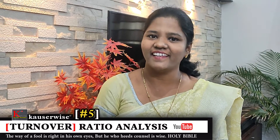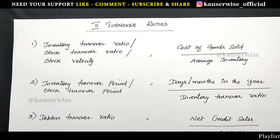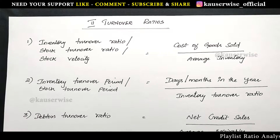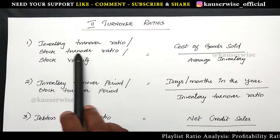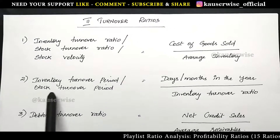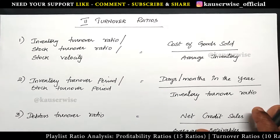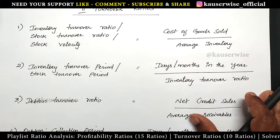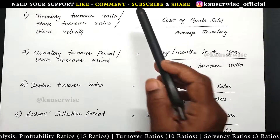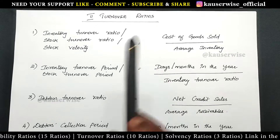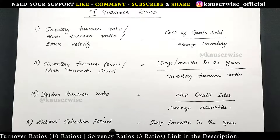Hi, welcome to my channel. This is Kouser Weiss and this is the continuation video of ratio analysis. In the previous video we have seen stock turnover ratio and stock turnover period along with the problem. You can find the playlist link in the description box. Now in this video we are going to see the other two different formulas which come under turnover ratio, that is debtors turnover ratio and debtors collection period.